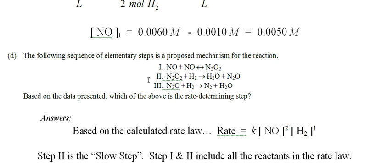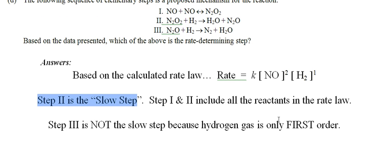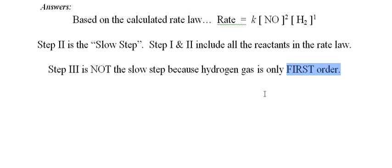If step 3 were the rate-determining step, hydrogen would have to be second order — because N₂O is an intermediate. But hydrogen is only first order, so step 3 is not the slow step. For hydrogen to be in the slow step, it would have to be a second-order reactant.